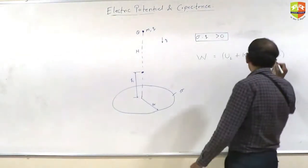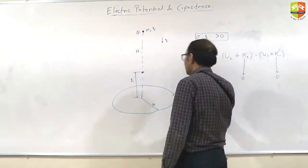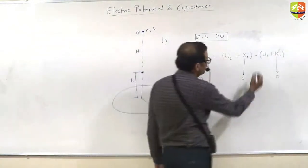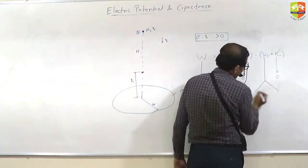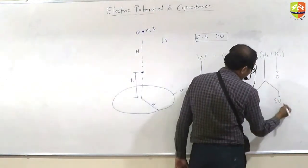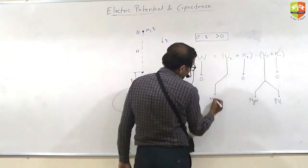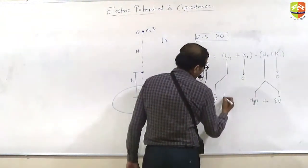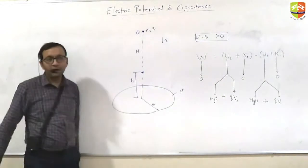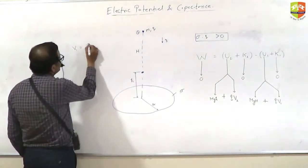Should I do it now? What is K1? 0. K2? 0. W? 0. Three things are 0. U1. Gravitational potential energy MGH. Electrostatic potential energy q into potential at point 1. U2 is what? MG into small h plus q into V2. What is V1?